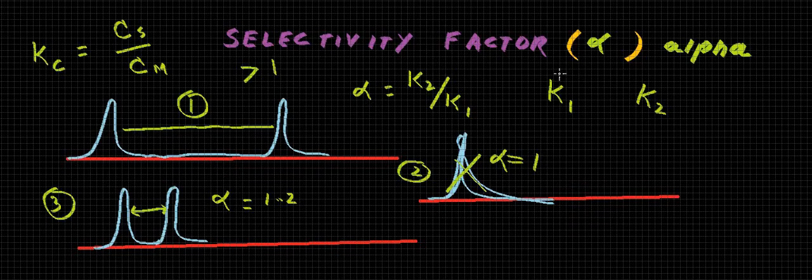Say for example, K1 is distribution coefficient of component A. Distribution coefficient or Kc is represented as the concentration of solute in the stationary phase divided by the concentration of solute in the mobile phase. It is a ratio.